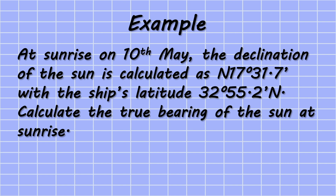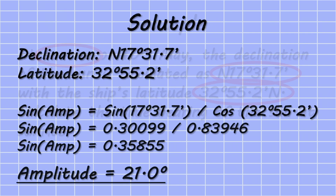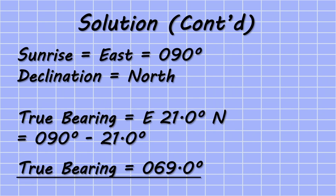Here is a typical amplitude question. Although there's lots of information, there are only three pieces we actually need: whether it's sunrise or sunset, the value of the declination, and the value of the latitude. To find the amplitude, we take the sine of the declination divided by the cosine of the latitude, which gives us the sine of the amplitude. By inverse signing this, we get our value of amplitude — which in this example is exactly 21 degrees.